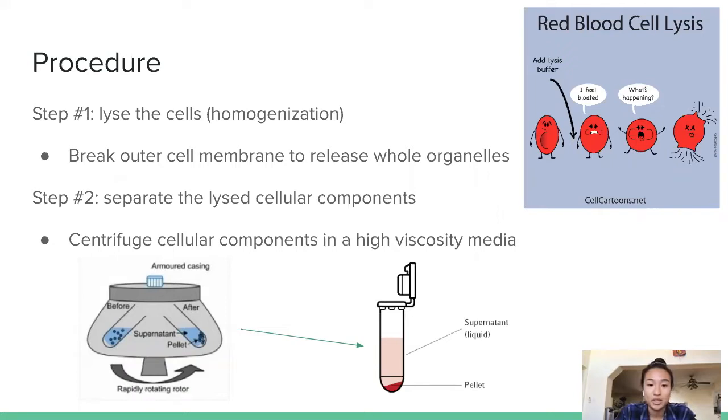Step one is the homogenization process where you lyse the cells. This step depends on the protein type or organelle you're studying, but typically includes a hypotonic lysis protocol with low concentrations of non-ionic detergent to separate whole organelles. The hypotonic solution breaks the cell membrane but leaves the internal compartments intact.